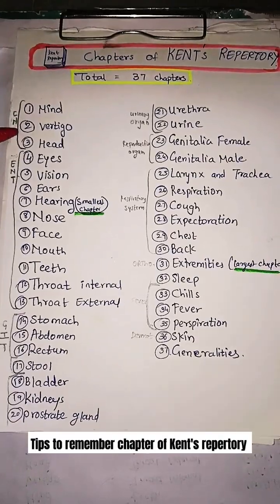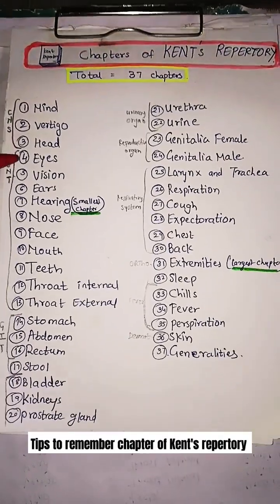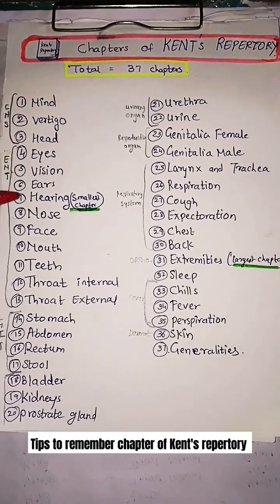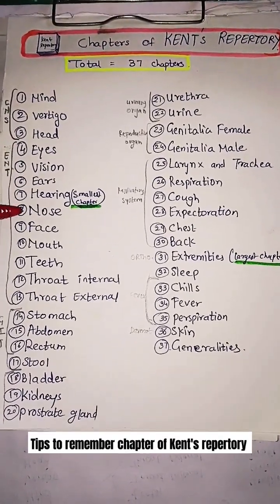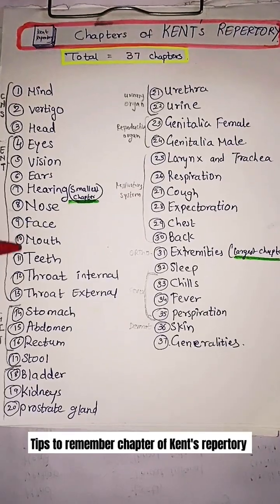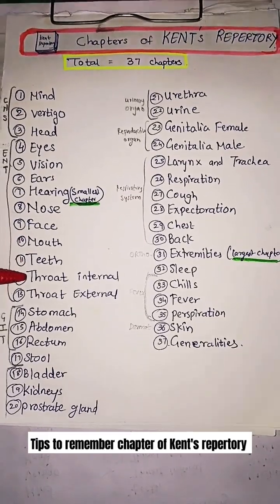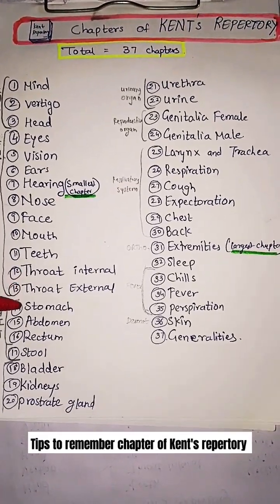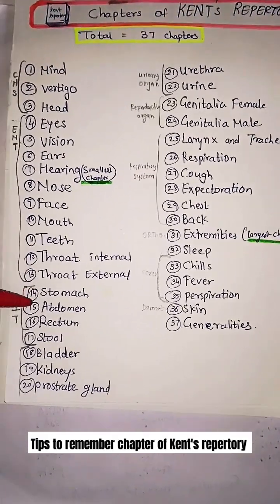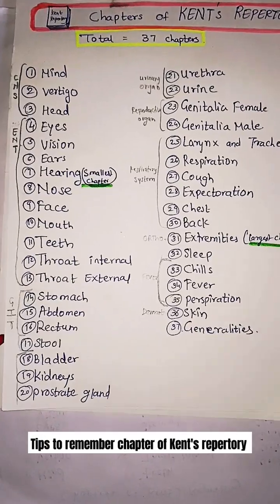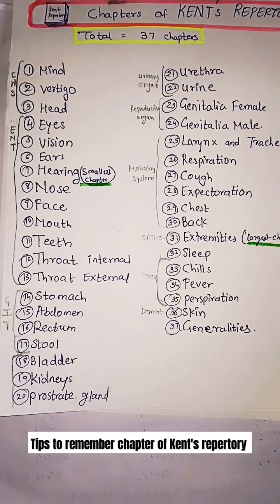The chapters are: Mind, Vertigo, Head, Eyes, Vision, Ears, Hearing, Nose, Face, Mouth, Teeth, Throat Internal, Throat External, Stomach, Abdomen, Rectum, Stool, and Bladder.